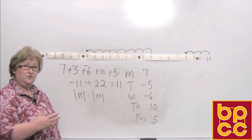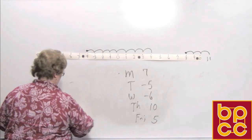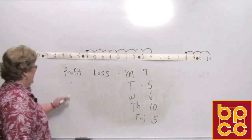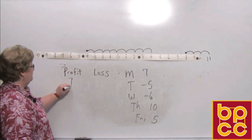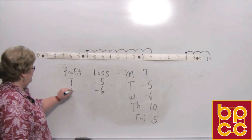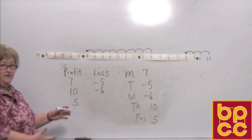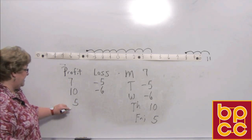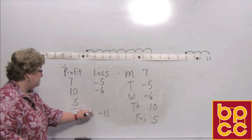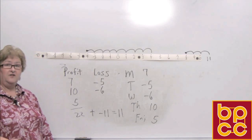Another way is to use a table with a profit column and a loss column. Monday profit: $7; Tuesday loss: $5; Wednesday loss: $6; Thursday profit: $10; Friday profit: $5. Add up all the profits: 7 plus 10 plus 5 equals 22. Add up all the losses: 5 plus 6 equals 11. When you combine them, there's more positive than negative, so profit wins — a profit of $11.